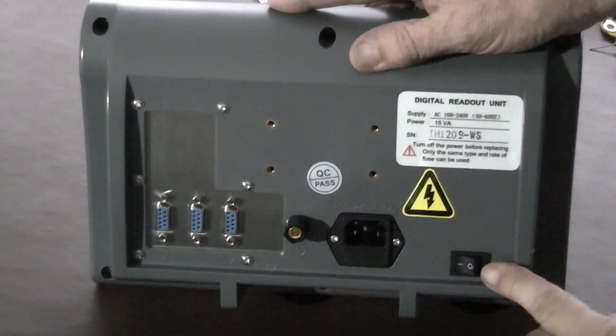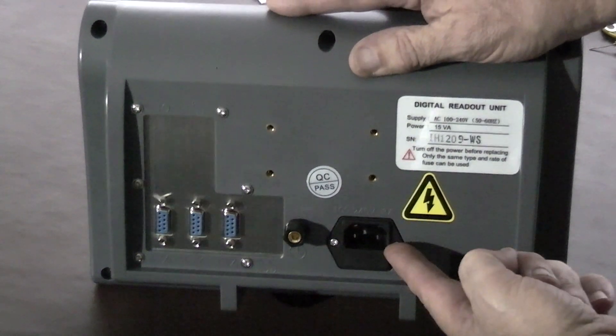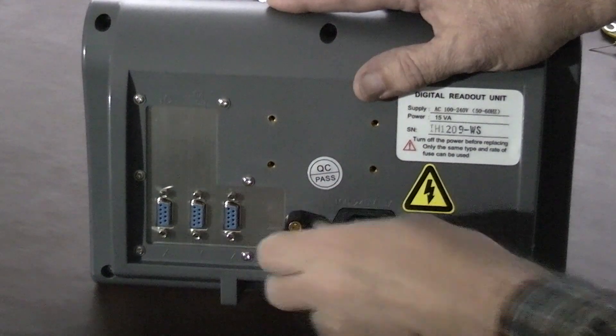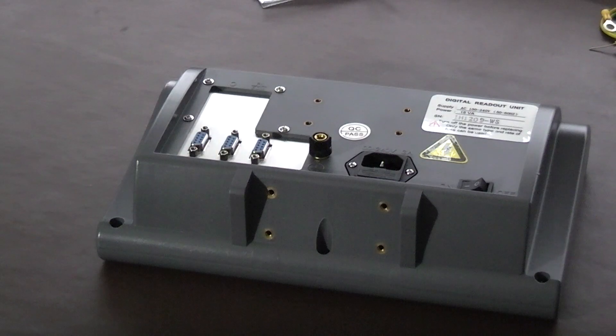So on the back you have on/off switch, power input, earthing point, and your X, Y, and Z readouts. Let's put some power to it, see what it looks like.